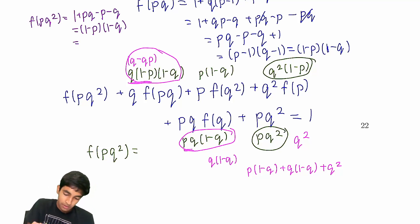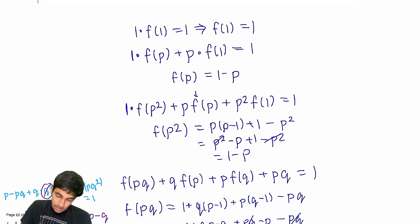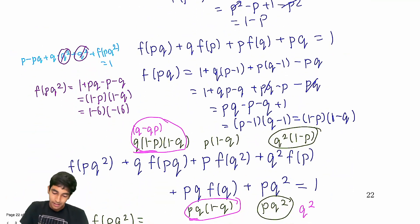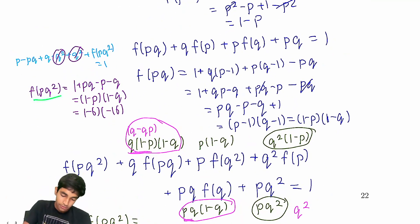And here it's pretty simple, right? We just put in 7 and 17. Negative 6, negative 16, and our answer should be 96. Isn't it kind of cool how f(pq²) is just the same as f(pq), and then f(p²) is the same as 1 minus p?